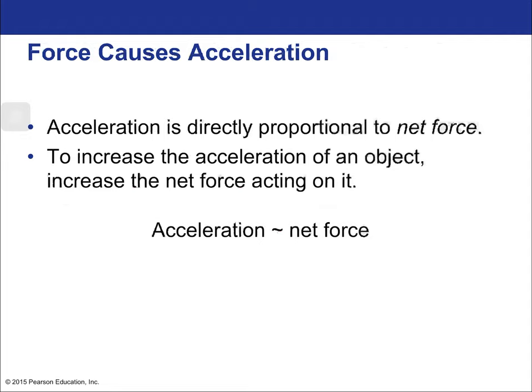Acceleration is directly proportional to net force. To increase the acceleration of an object you have to increase the net force acting on it. This is the precursor to Newton's second law. The tilde symbol here is the proportionality symbol. This is direct proportionality — one goes up, the other goes up — as opposed to inverse proportionality where one goes up and the other goes down.